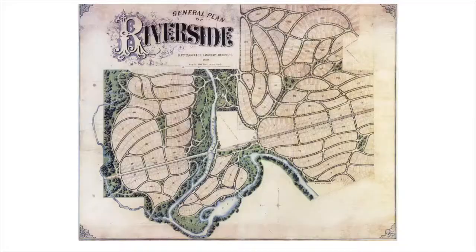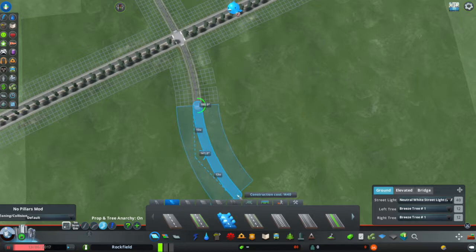Those are some good park design points we can learn from Olmstead. The second takeaway has to do with street design. His streets are very odd — not a grid at all. The best way to show how this applies to City Skylines is to jump into a time lapse showing how I put together a very Olmstead-esque streetscape, and talk about what it's for, what it's used for, and why it might work in your city.